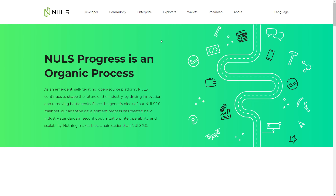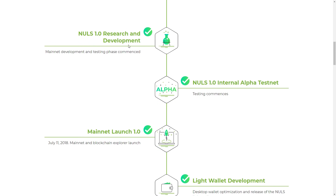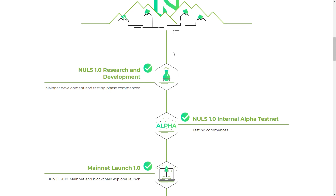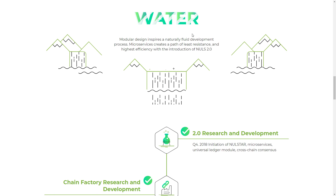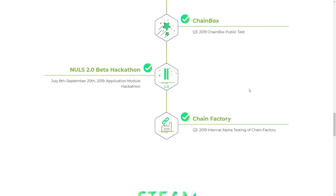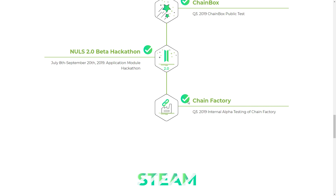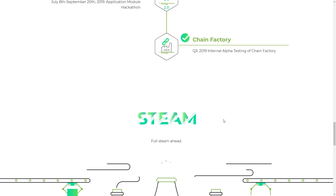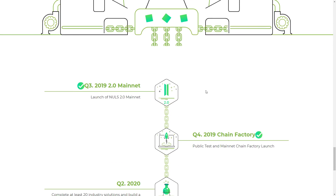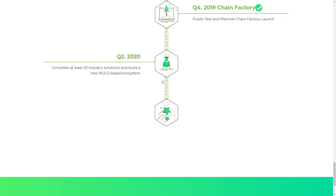Here you can see the roadmap of the project. NULS progress is an organic process — you can see what they already did, what they want to do, and what they're planning for the future. The modular design inspires a naturally fluid development process; microservices create a path of least resistance and highest efficiency. With NULS 2.0, Chain Factory is already done and Chain Box has been covered as well.